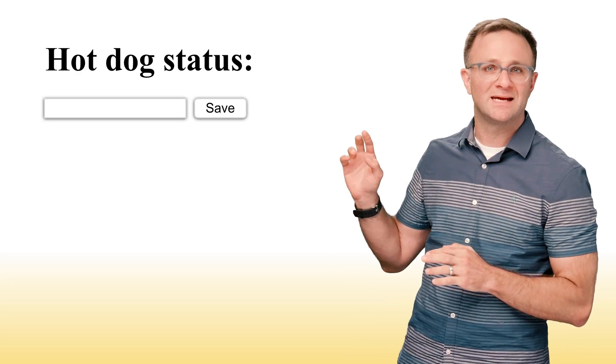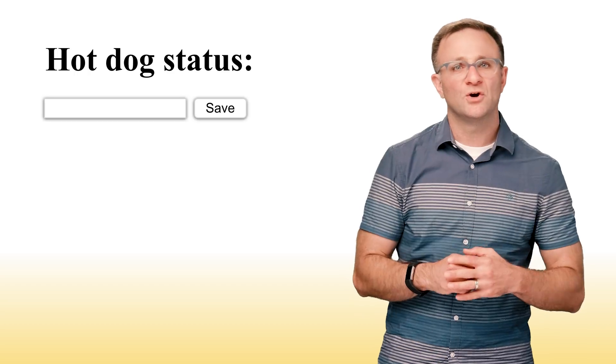So using my amazing HTML skills, I have created this web page consisting of a text field where we can record the latest hot dog as a sandwich status. Then next to it, I've got a Save button where we can save this information to the cloud and a big old h1 tag at the top where we can display our latest hot dog status info. Now later, we'll load whatever data our user has saved to the cloud and display it in the header tag at the top.